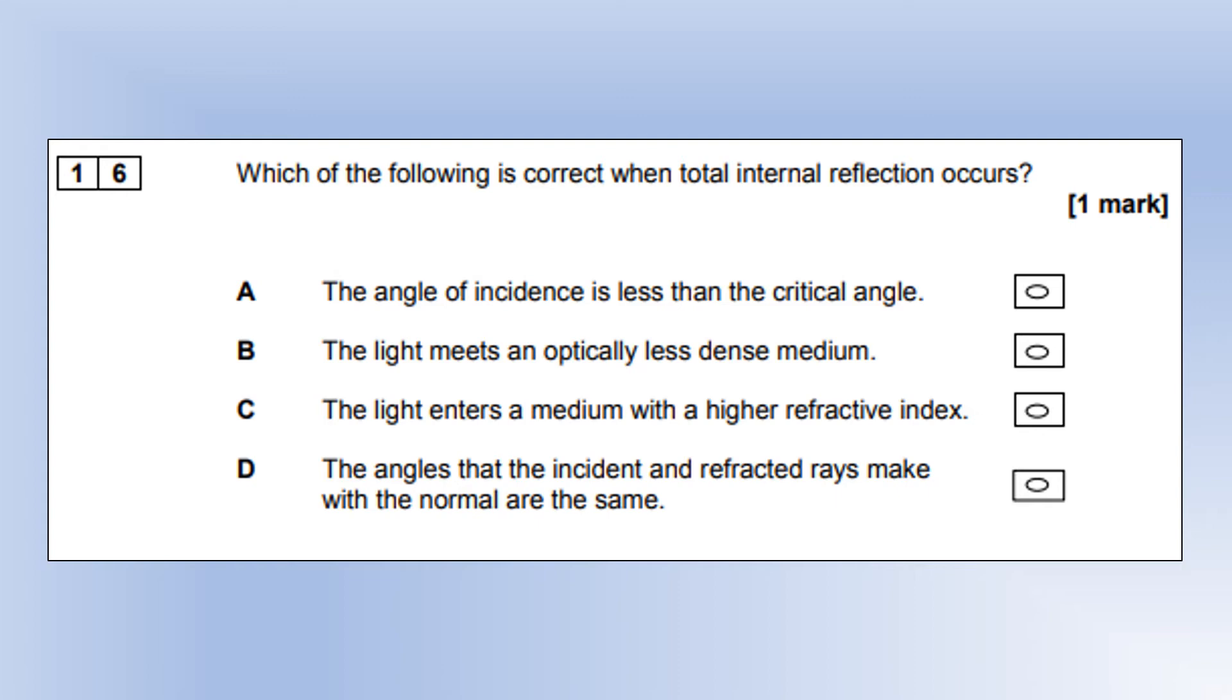Which of the following is correct when total internal reflection occurs? Angle of incidence is greater than the critical angle. That's not right. It goes from high optical density to low. That is correct, that works. Option C says it goes from high to low, so C is wrong. Total internal reflection, there is no refraction, so that's not right either.